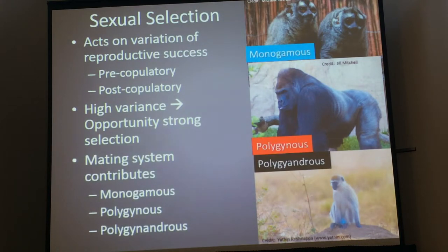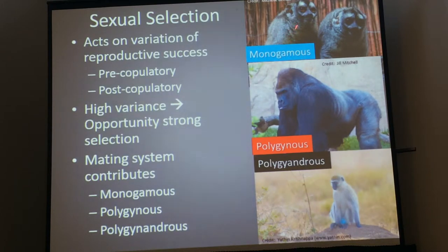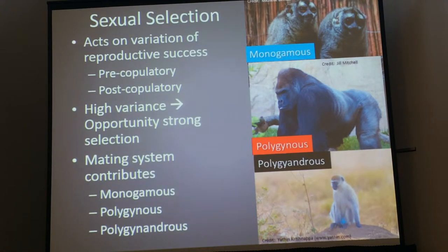Mating system can contribute to this. I've got my three species shown here with consistent colors. Monogamous, shown in blue, are owl monkeys — you can see they're pretty similar in size, because males will have one or zero mates, so variation is low. There's not a lot of pre-copulatory selection, and they also tend to have small testes sizes, simply because nobody else is mating with their mates.